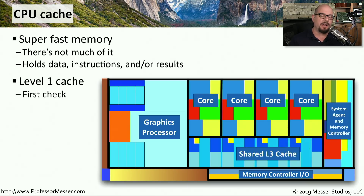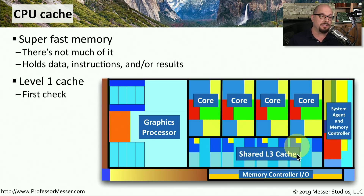There are very commonly different levels of cache on processors, and the number of levels and where they're located will depend on the model of the CPU. Level one cache is usually the one closest to the processor itself, providing that first check or first storage of data.